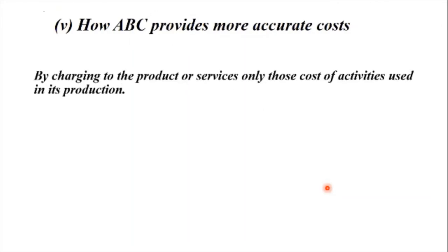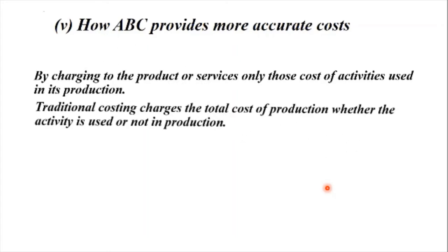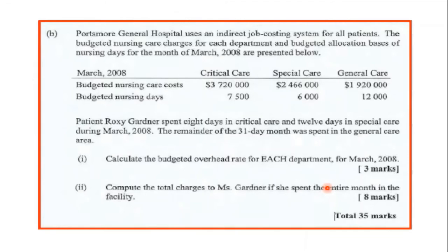How ABC provides more accurate costs: by charging to the product or service only those costs of activities used in its production. Traditional costing charges the total cost of production whether the activity is used or not. That brings us to the end of Part A. We move to Part B, which deals with service costs.